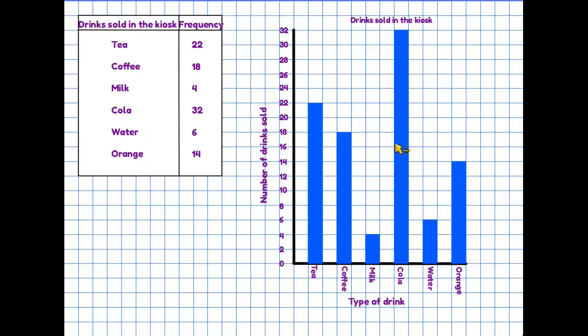Let's have a look then at another example of a bar chart. Here we have information on the left hand side telling us this time about drinks sold in a kiosk. We have tea, coffee, milk and so on, and the right hand column is the frequency telling us how many of each of the drinks have been sold. So let's check first of all the bar chart to make sure that it's giving us all the information we need.